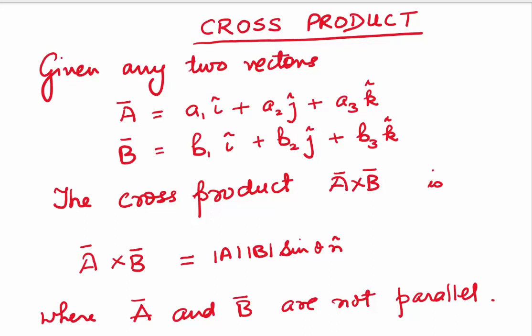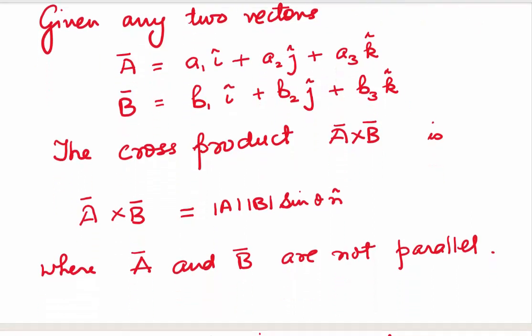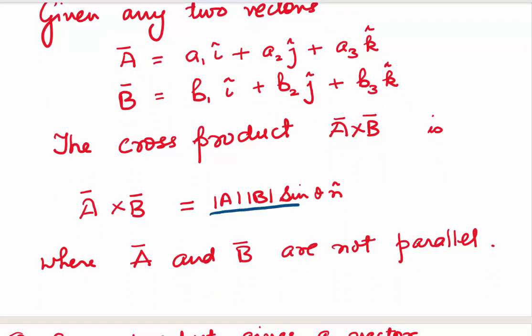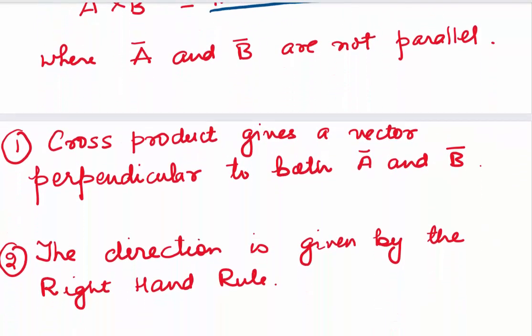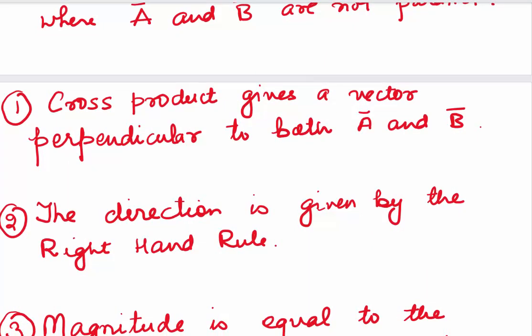The second type of vector multiplication is the cross product. Given vectors A = a1i + a2j + a3k and B = b1i + b2j + b3k, the cross product A cross B is given by |A||B| sinθ n-hat, where n-hat is the unit vector giving the direction. The cross product is always a vector, whereas the dot product is a scalar. A and B must not be parallel, and the cross product gives a vector perpendicular to both A and B.